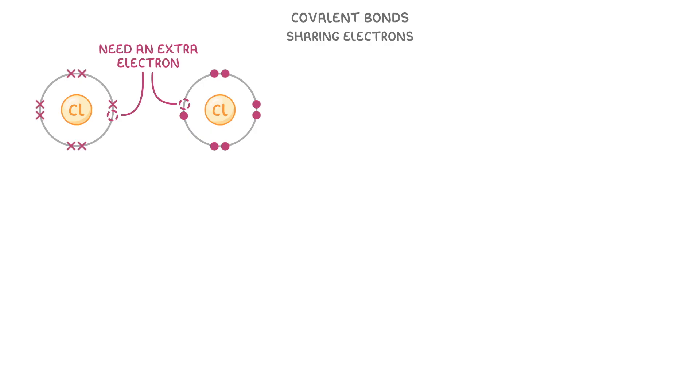Instead what they can do is share some electrons. And as each atom needs one extra electron, they each share one of their own so that together two are being shared and they each get one extra. The way that we've drawn this is called a dot and cross diagram.